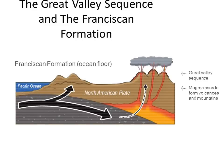As volcanoes were forming inland, the surface of the ocean floor was being sheared off as it met the coastline, literally plastering all sorts of marine sediment on top of the newly forming land mass, extending California westward. Geologists call this the Franciscan Formation, the remains of which are generally found on the west side of present-day Napa Valley.